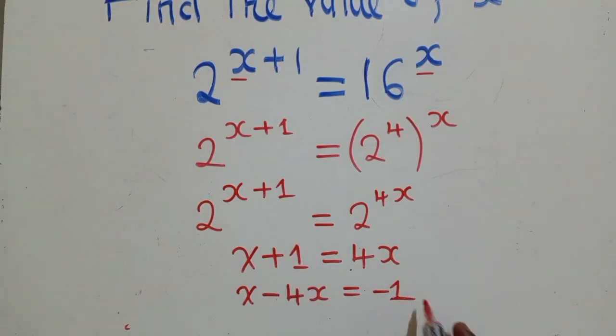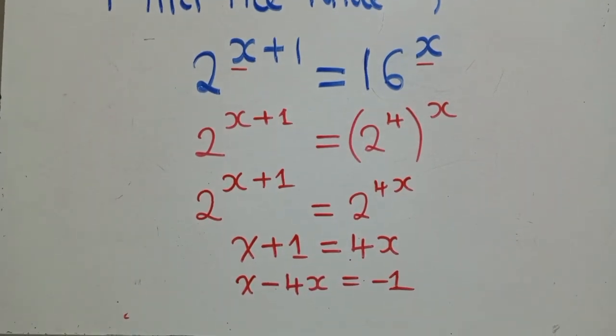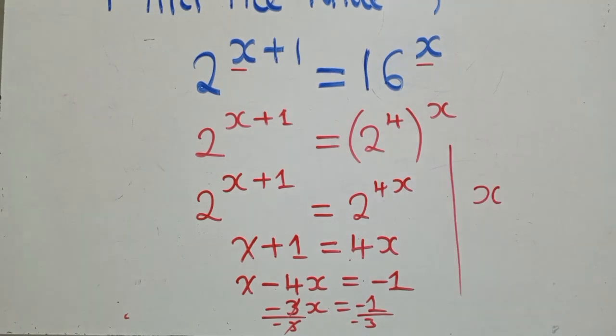So from this stage, we can say negative 3x is equal to negative 1. So now, from here, we divide by negative 3 by negative 3. So this side will remain with x. Let me put it here,